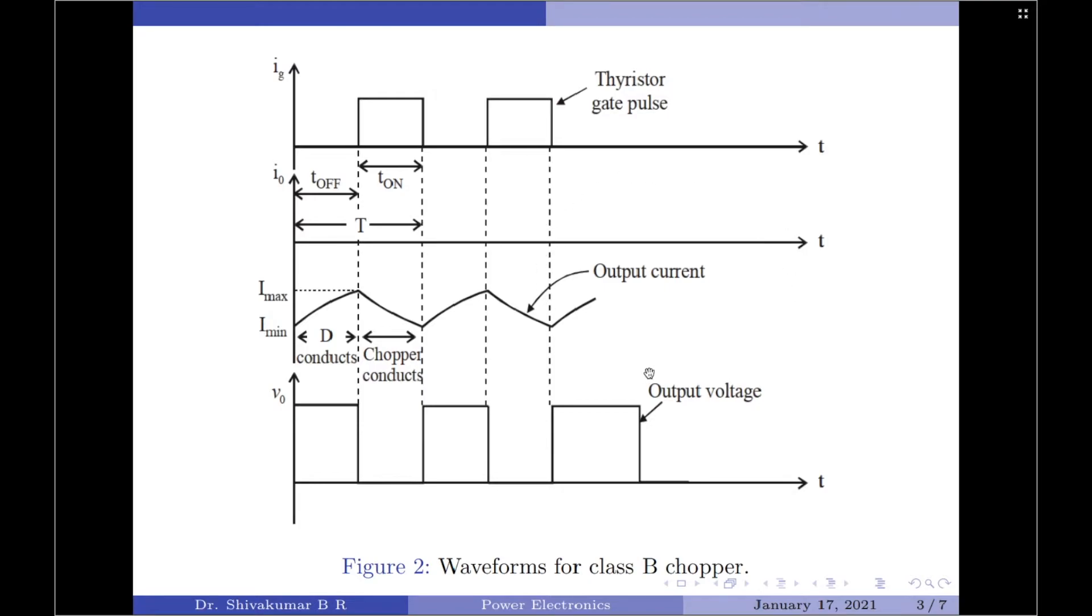Figure 2 here shows the waveforms for the thyristor gate pulse, load voltage, and load current. Please note, we have considered a continuous load current mode of operation for this analysis. Therefore, the chopper switch must be closed once again in the next cycle before the load current becomes zero when the chopper is open.